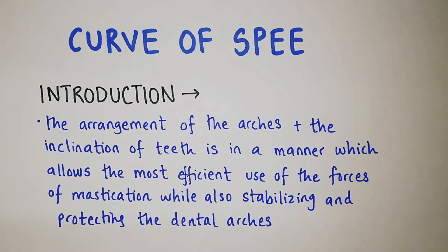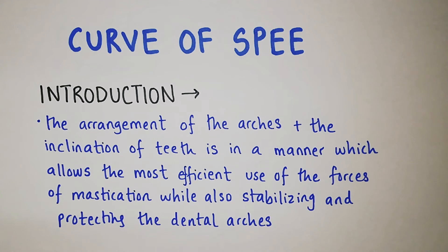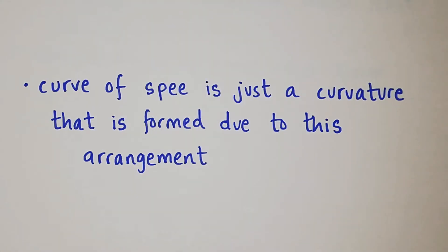The topic of today's video is the Curve of Spee. The arrangement of the arches and the inclination of teeth is in a manner which allows the most efficient use of the forces of mastication while also stabilizing and protecting the dental arches. This means the teeth in our mouth are arranged at angles so that masticatory forces are equally distributed, keeping our teeth protected and allowing us to masticate properly. This arrangement is called the Curve of Spee.